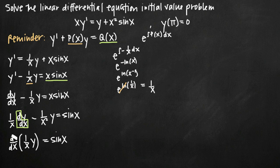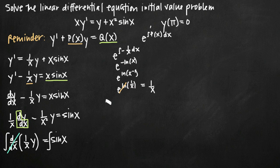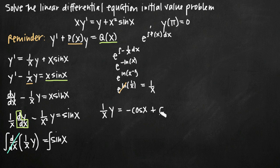Now we integrate both sides of our equation. On the left hand side, the integral of a derivative cancels, leaving just 1 over x times y. On the right hand side, the integral of sine of x is negative cosine of x, and we add a constant of integration C on the right hand side because we'll need to solve for it using our initial condition.